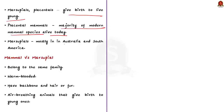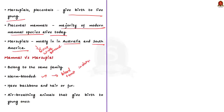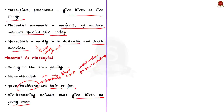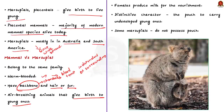Most marsupials can be found in Australia and South America, although the fossil record shows they were once more widespread. Mammals and marsupials belong to the same phylum. Both are warm-blooded, meaning their blood temperature does not change with the surrounding temperature. Furthermore, they are chordates, meaning they all have backbones. They also have body hair and fur, and are air-breathing animals that give birth to live young ones. Only monotremes lay eggs — the most common example being the platypus.